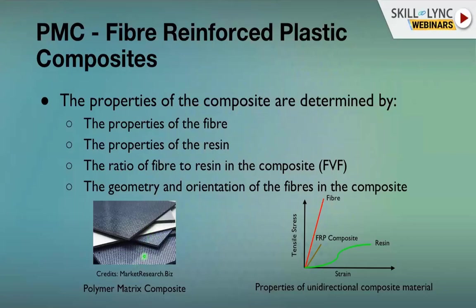As an illustration, comparing tensile strength versus strain: resin alone has minimal tensile properties but higher strain capability. Fiber alone has very high tensile properties but very low ductility. When combined, you get optimized properties — that is the advantage of composites, because neither resin nor fiber alone is sufficient.